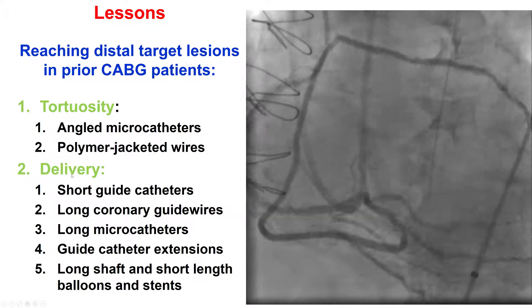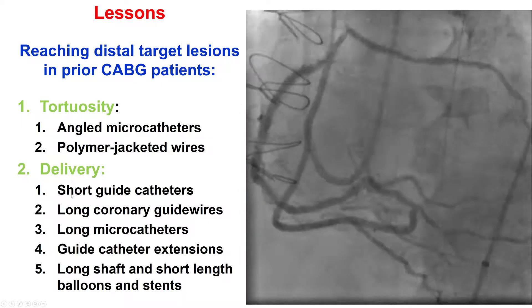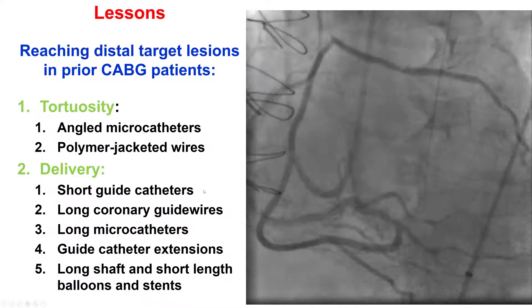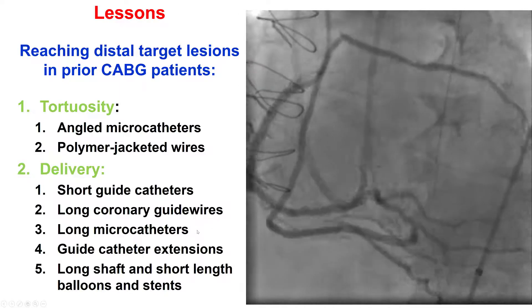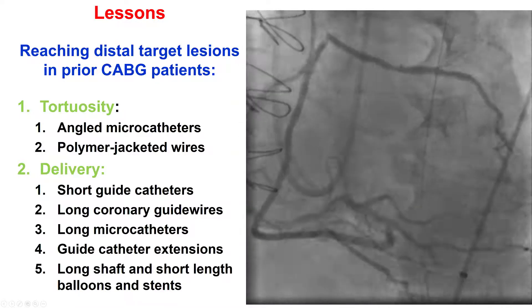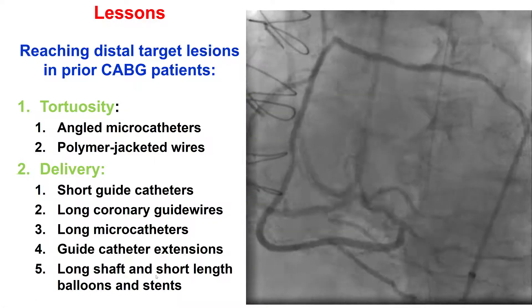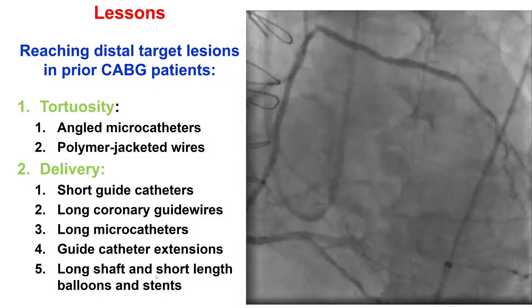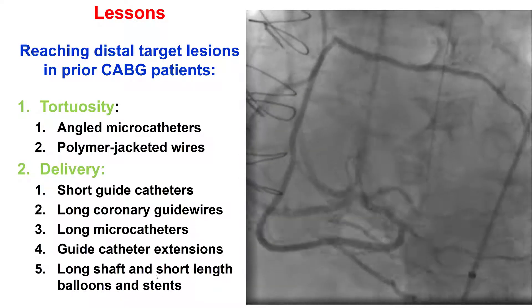The second key challenge is delivering equipment through tortuous and far-distal lesions. To achieve this, use short guide catheters — 90 cm guides are routinely used in CTO-PCI. Use long guidewires and long microcatheters like the Micro14 at 155 cm, as well as guide catheter extensors to straighten tortuosity and enhance deliverability. Finally, it is important to know the shaft lengths of balloons and stents and to use longer shaft versions, as it can literally be an issue of two or three centimeters before reaching the lesion or not.